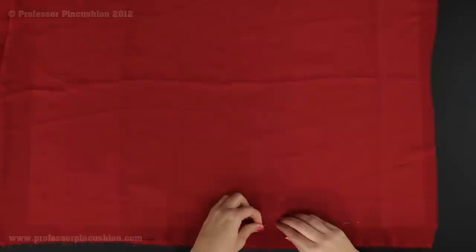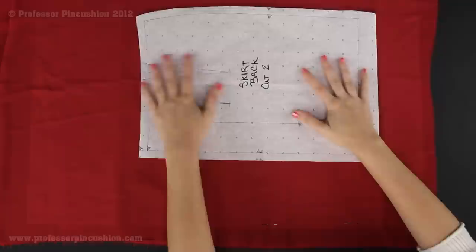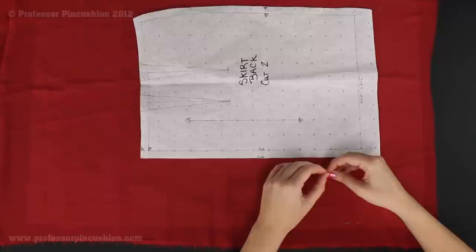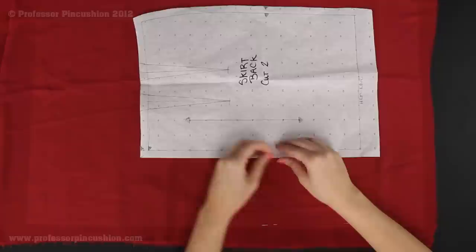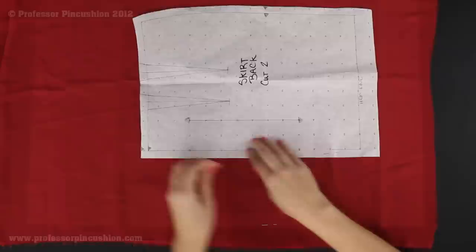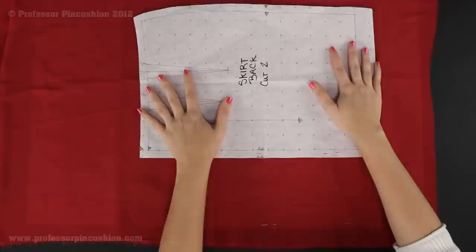So after I finish pinning it, I'm then going to grab my pattern piece, lay it on top of that, and then I'm going to pin through all three layers. So I'm going to pin through the pattern piece, the fabric, and the tissue paper. So the tissue paper gives us something to grab onto underneath. And it should cooperate a lot easier. So you're going to do this for all of your pattern pieces that you have.